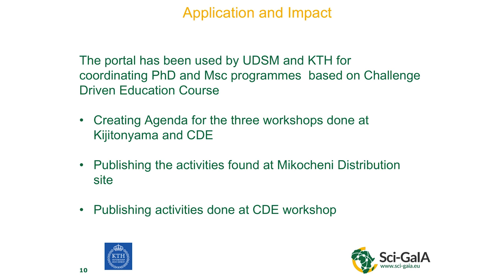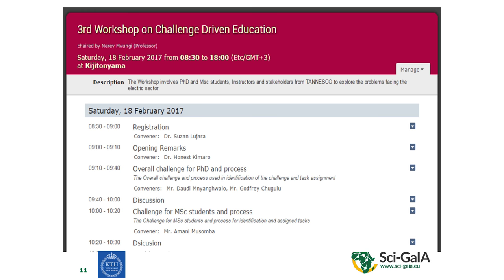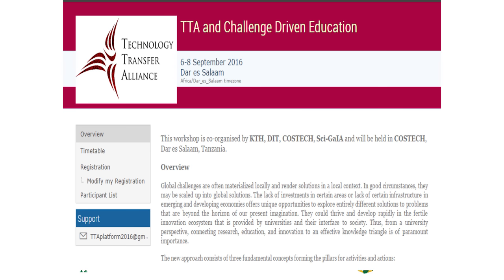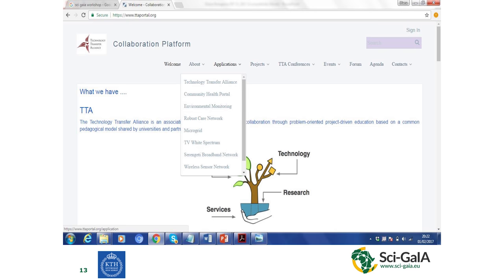The first workshop focused on brainstorming and presenting problems. After that, participants had the chance to visit a micro-grid distribution site to see how those problems really affect the intended goals. All of this was documented in our portal. This is one of the events created through the portal, and another workshop based on challenge-driven education also happened and was published there.